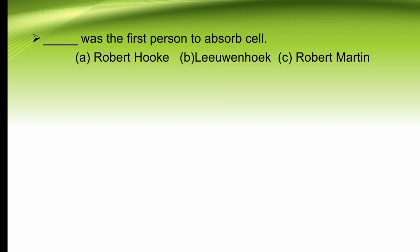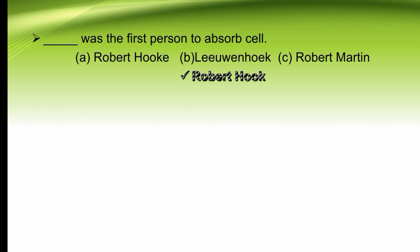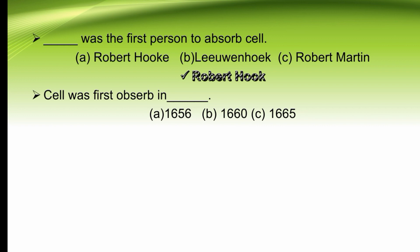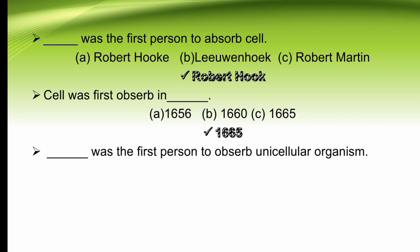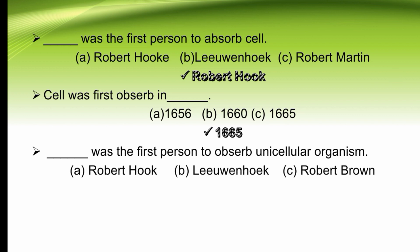Dash was the first person to observe a cell — Robert Hooke, Leeuwenhoek, or Robert Martin. The right option is Robert Hooke. Cell was first observed in dash — 1656, 1660, or 1665. Robert Hooke first observed the cell in 1665. The right option is C. Dash was the first person to observe unicellular organisms — Robert Hooke, Leeuwenhoek, or Robert Brown. The right option is Leeuwenhoek, who was the first person to observe unicellular organisms through a microscope.